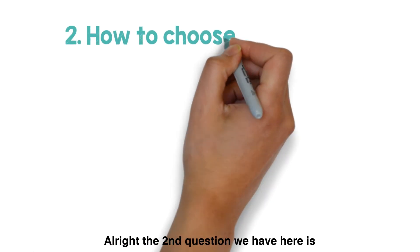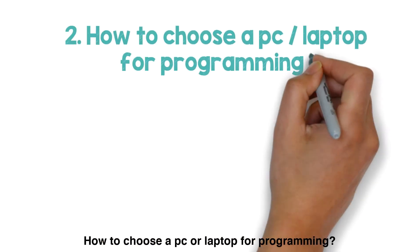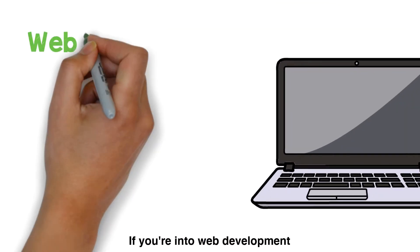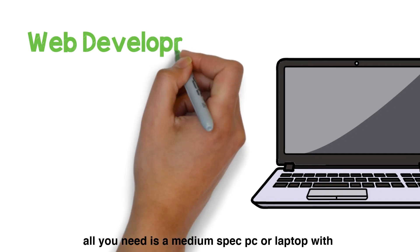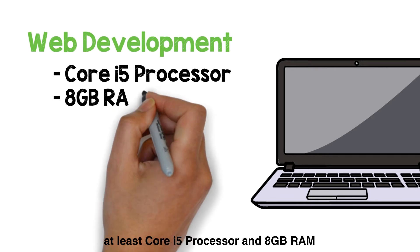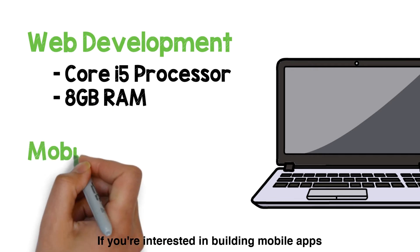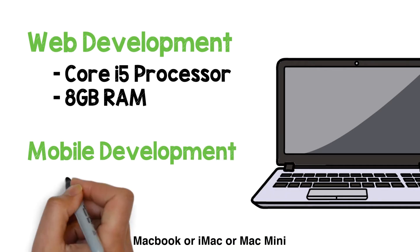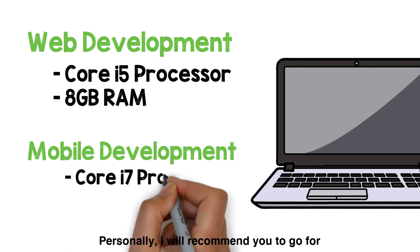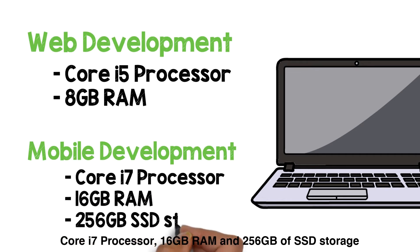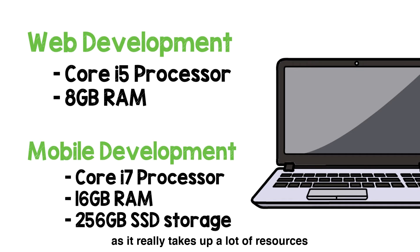The second question we have here is: how to choose a PC or laptop for programming? Again, this really depends on what type of development you are into. If you are into web development, be it front-end or back-end, all you need is a medium-spec PC or laptop with at least a Core i5 processor and 8GB RAM to kickstart your journey. If you are interested in building mobile apps, chances are you will need to get a slightly higher-spec MacBook, iMac, or Mac Mini. Personally, I would recommend going for a Core i7 processor, 16GB RAM, and 256GB of SSD storage, as it really takes up a lot of resources while you are building Android or iOS apps.